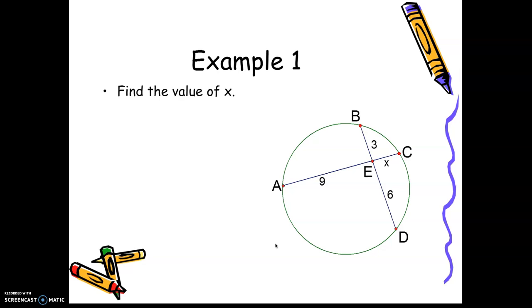Our first example is when you have the two chords. It's the product of the two parts: 3 times 6 equals 9 times X. That gives you 18 equals 9X, and you solve for X — X is 2. So that's when you have the two chords intersecting inside the circle.